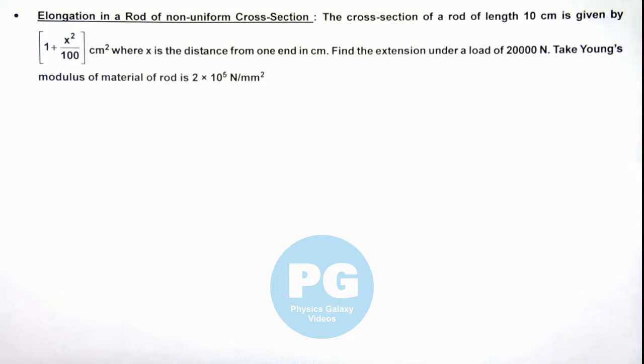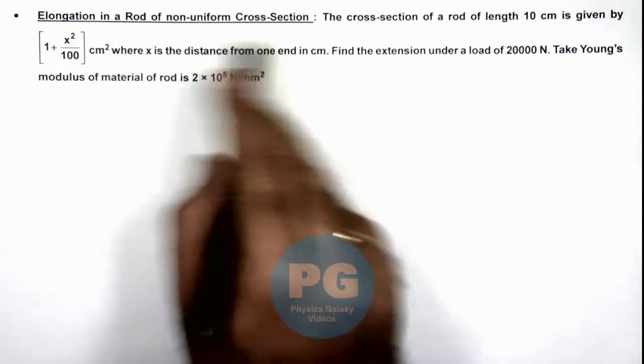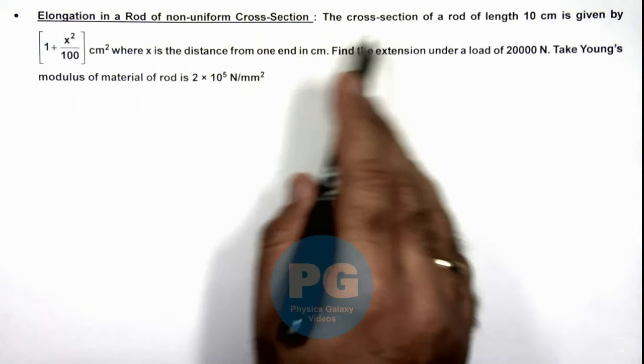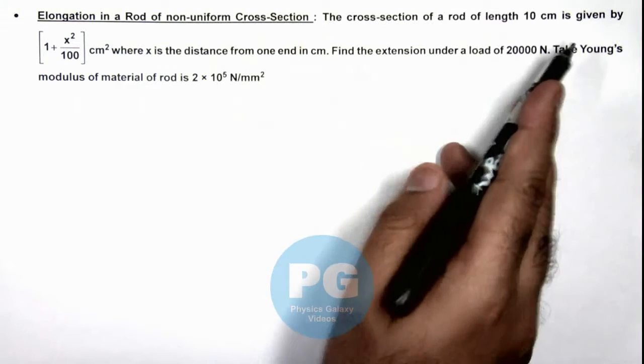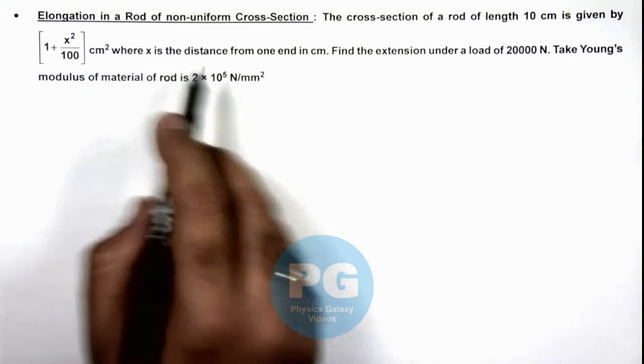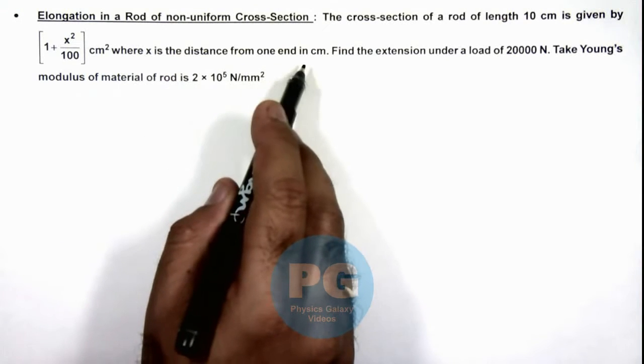In this illustration we'll analyze the elongation in a rod of non-uniform cross section. Here we are given that the cross section of a rod of length 10 centimeter is given by 1 plus x squared by 100 centimeter squared, where x is the distance from one end in centimeter.